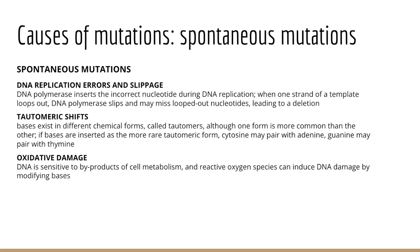We also have tautomeric shifts. Purines and pyrimidines can exist in tautomeric forms — alternate chemical forms that differ by a shift of some protons. Changes in the covalent structure of a purine or pyrimidine may lead to base pair changes: for example, adenine pairs with guanine, or thymine pairs with cytosine, instead of the traditional A-T and G-C pairings. A mutation then occurs during DNA replication when in the next round those mismatched bases separate and each becomes the template for the normal complementary base — typically yielding a point mutation.